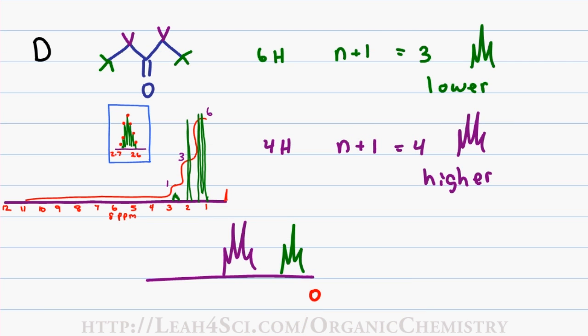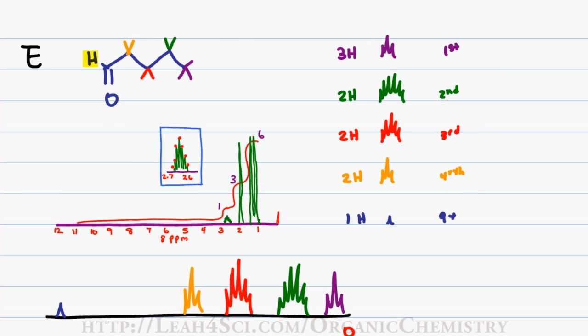Molecule D is easy to rule out because it only has two peaks and we were given three peaks in our sample graph. And last but not least, molecule E has four peaks plus the aldehyde for a total of five, while our example graph only has three peaks.